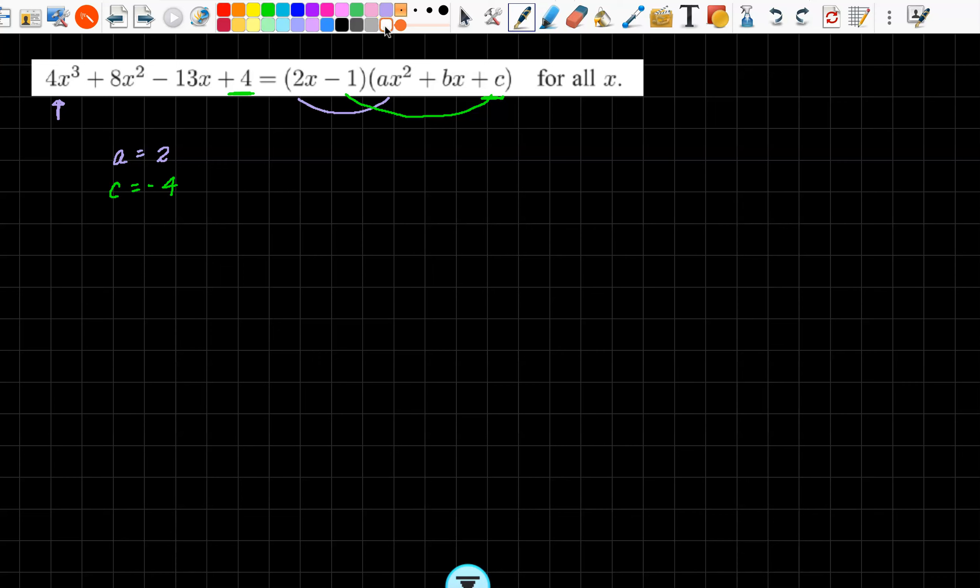Now what I'm going to do is pop these to the side because once you have established your values for a and c, what you now need to do is go back over here and rewrite. So instead of ax squared, it's now going to be 2x squared. I don't know my middle term still, so that still remains as bx, but my c value is minus 4.